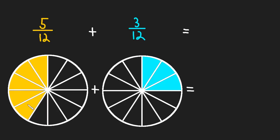Well, it seems like if we take one, two, three, four, five of the pieces, plus one, two, three, we should just end up with eight out of the twelve pieces. We should end up with eight of those twelve pieces.